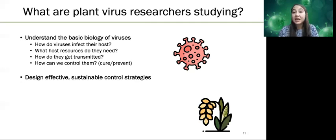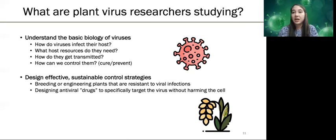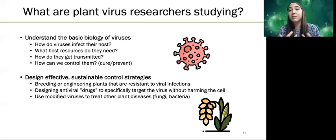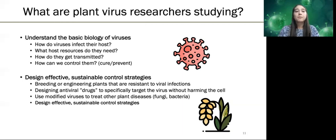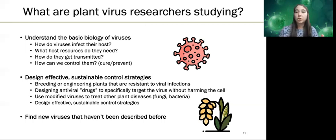We also want to design effective and sustainable control strategies. This could be accomplished by, for example, breeding or engineering plants that are resistant to viral infections, or designing antiviral drugs or compounds that specifically target a virus without harming the host plant. We can also use modified versions of viruses as vehicles or carriers for other molecules. Another thing plant virology researchers do often is find new viruses — always surveying and hunting for viruses that haven't been described before, or viruses jumping from one species to another, as happens frequently with animal viruses.